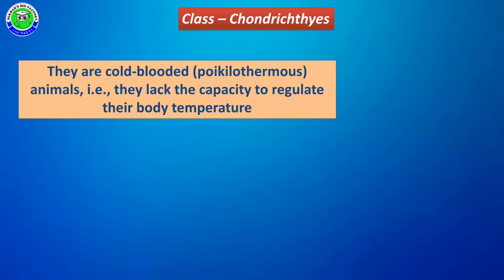Animals are generally of two types: cold-blooded and warm-blooded. Chondrichthyes members are generally poikilotherms — cold-blooded animals. Due to having cold blood, they do not have the ability to regulate their body temperature. Whatever temperature is present in their surroundings, the same temperature is maintained in their body.